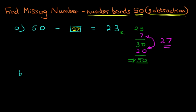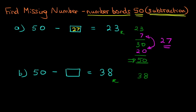Now let's have a look at our second example. This time we've got 50 minus something equals 38. Now again, the same principle applies — what number added to 38 is going to make it equal to 50? So we start with 38. My first objective is to get the 8 to equal 0, so I'm going to add 2.